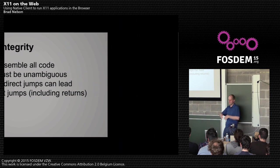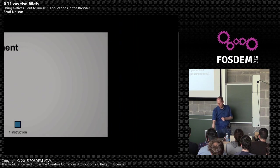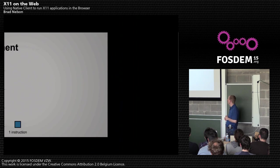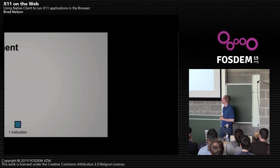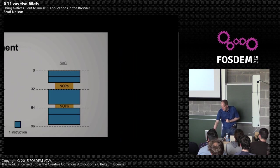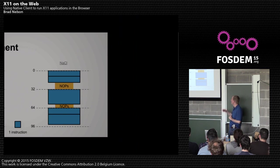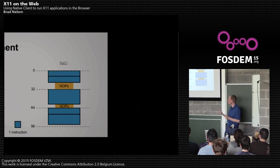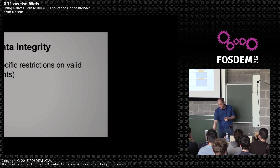Even a return from a function is an indirect jump, and if the stack is untrusted, you've got issues. On architectures like x86 you don't know how big an instruction is going to be, so you could jump into the middle of an instruction. The key thing Native Client does for security is force bundle alignment — at every 32-byte boundary there's a safe point. With an indirect jump, you mask off the bottom five bits and know you're safe wherever you land. The drawback is you have to pad bundles with NOPs, which gives some performance overhead.